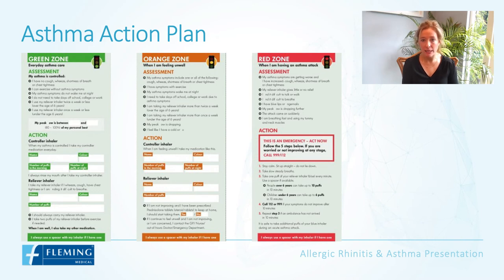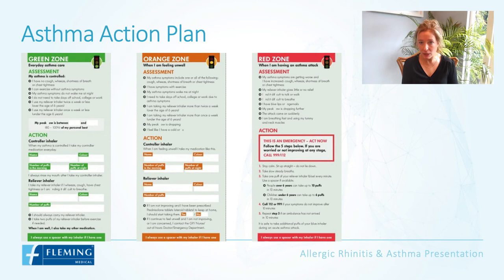Ensure the patient is sitting upright, taking slow breaths in and out, and have them use their short-acting beta agonist — salbutamol inhaler — ideally with a spacer where possible. For patients over six, give one puff every minute for 10 minutes. For those under six, give six puffs over 10 minutes. If symptoms haven't resolved, call an ambulance immediately — you may have already called one if urgency was apparent. If the ambulance hasn't arrived after 10 minutes, recommence giving the puffs as before.